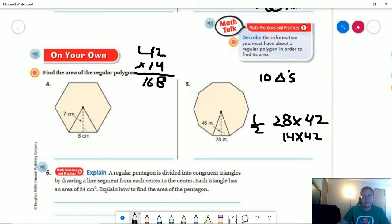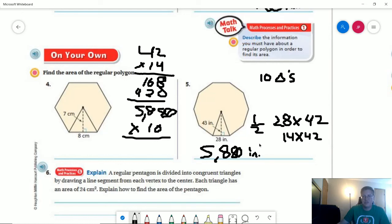And that is going to give me 588. And then I'm going to multiply that times 10, which, going back to one of my little mental math tricks would be the same thing as putting a zero at the end of this. So my answer is going to be 5,880. And that would be inches squared.